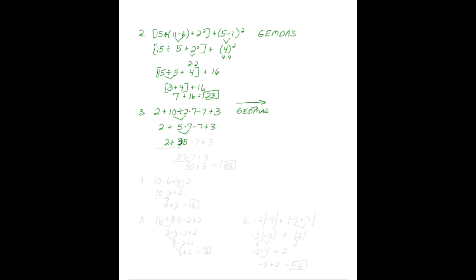So we have 2 plus 35 minus 7 plus 3. Working the problem left to right, 2 plus 35 is 37. 37 minus 7 plus 3. Going left to right, we will have 30 plus 3 equals 33.